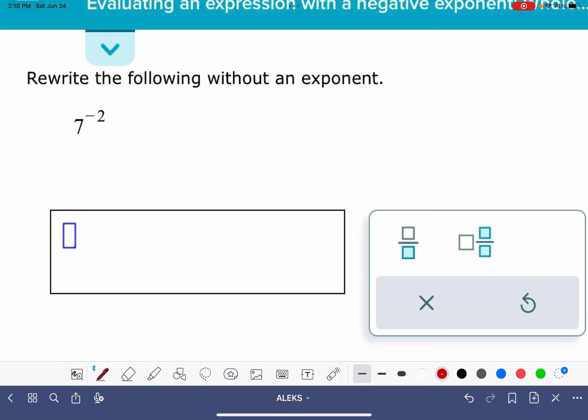The rule that we're going to use for that is anytime you have a negative exponent, that is equal to that same term down in the denominator of a fraction without the negative sign on the exponent. So 7 to the negative 2 is equal to 1 over 7 to the 2.